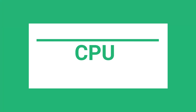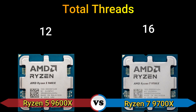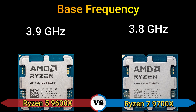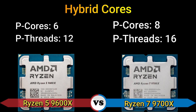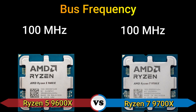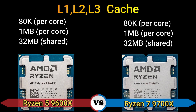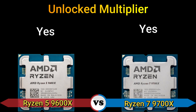Part 2: CPU. Total cores: 6 and 8. Total threads: 12 and 16. Base frequency: 3.9 GHz and 3.8 GHz. Performance cores: 6 with 12 threads, and 8 with 16 threads. Turbo clock: up to 5.4 GHz and up to 5.5 GHz. Base clock: 100 MHz. Multiplier: 39x and 38x. L1, L2, L3 cache: 8 KB per core, 1 MB per core, 32 MB shared. Unlocked multiplier: yes.